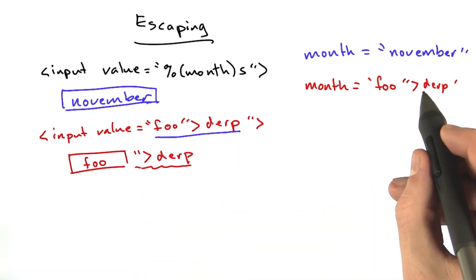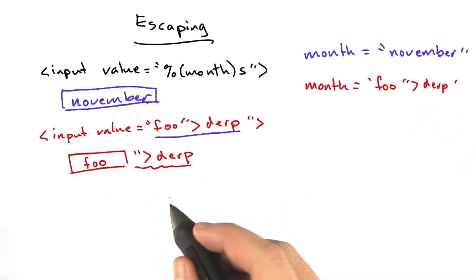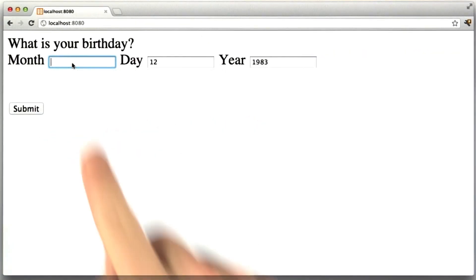What if instead of derp it was something better? Let's look at that in our browser. So we're going to enter our bad data again, and this time we're going to put HTML in there.